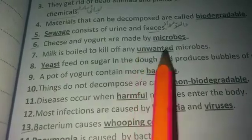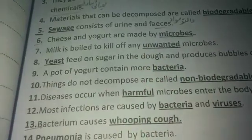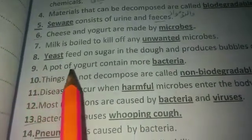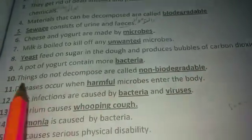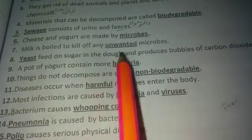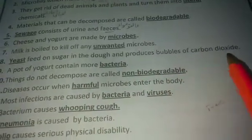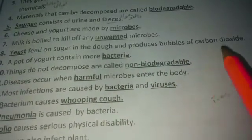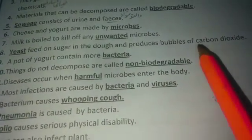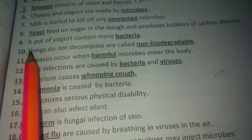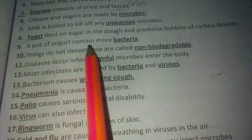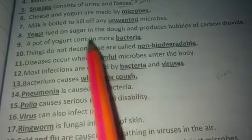Milk is boiled to kill off any unwanted microbes. Number eight: yeast feeds on sugar in the dough and produces bubbles of carbon dioxide. Number nine: a pot of sugars contains more bacteria.